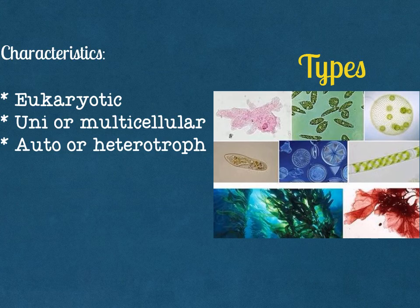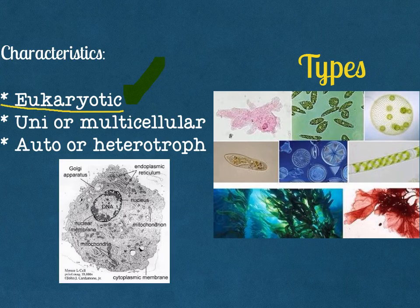Let's start with the characteristics of a protist. First of all, remember that they are eukaryotic organisms, which means they have a nucleus. I found this image of a eukaryotic cell — it's really pretty because it's an actual microscopic photograph, probably taken by an electron microscope. We can see the real nucleus here; this is a real picture, not a drawing or a diagram.